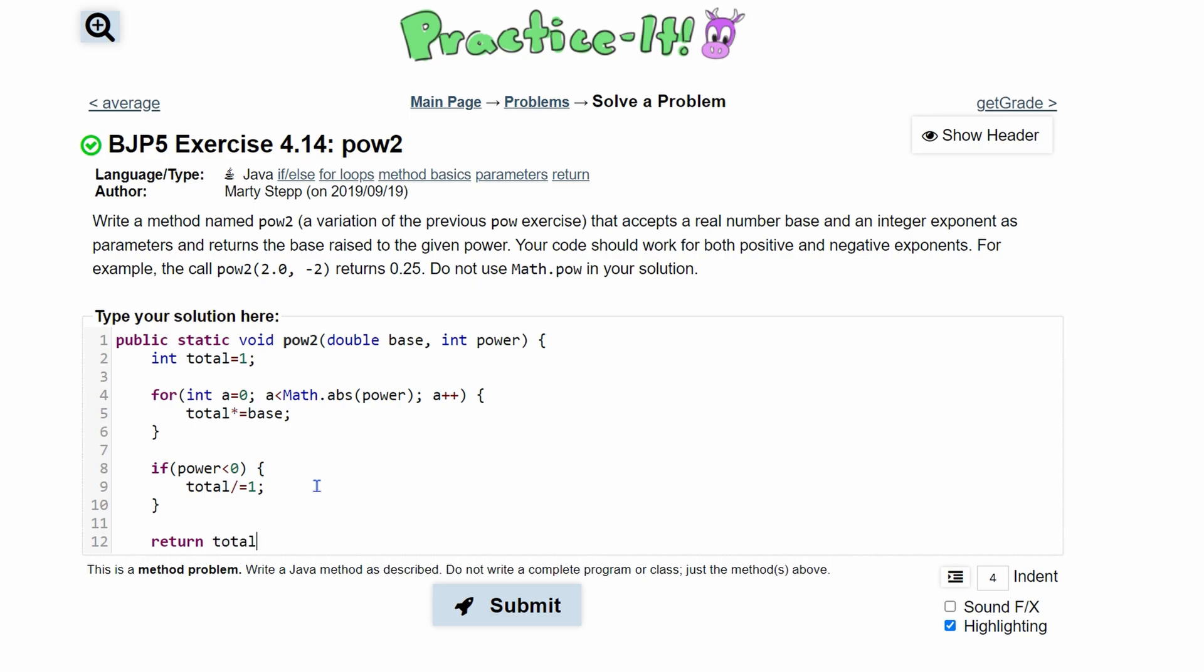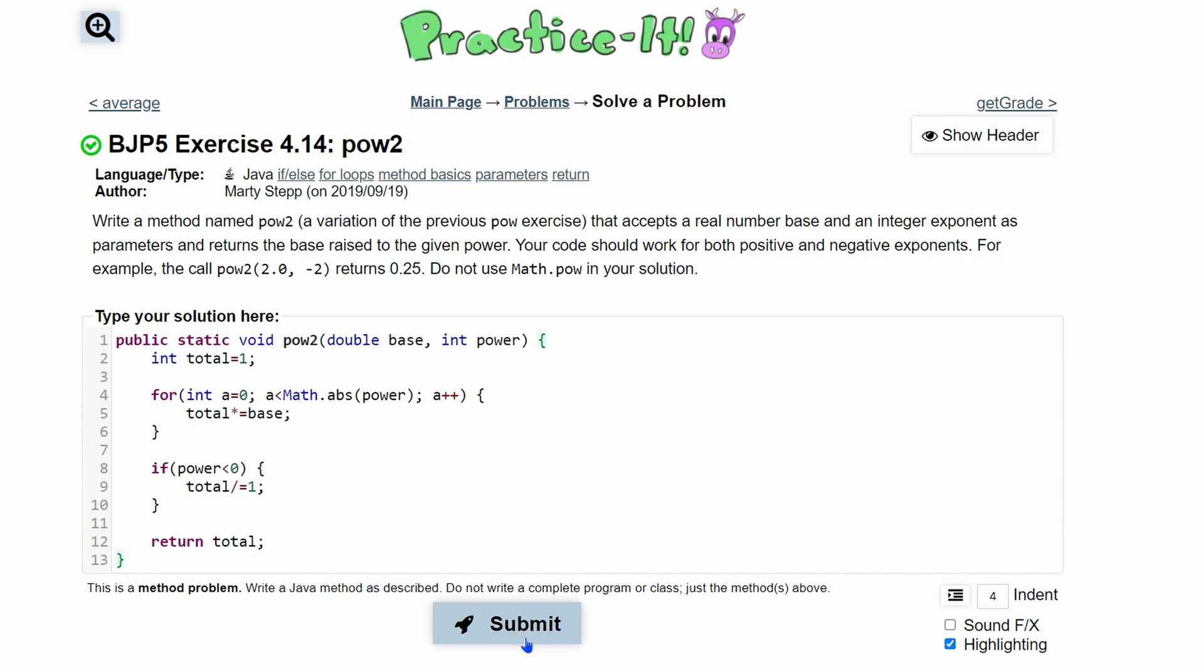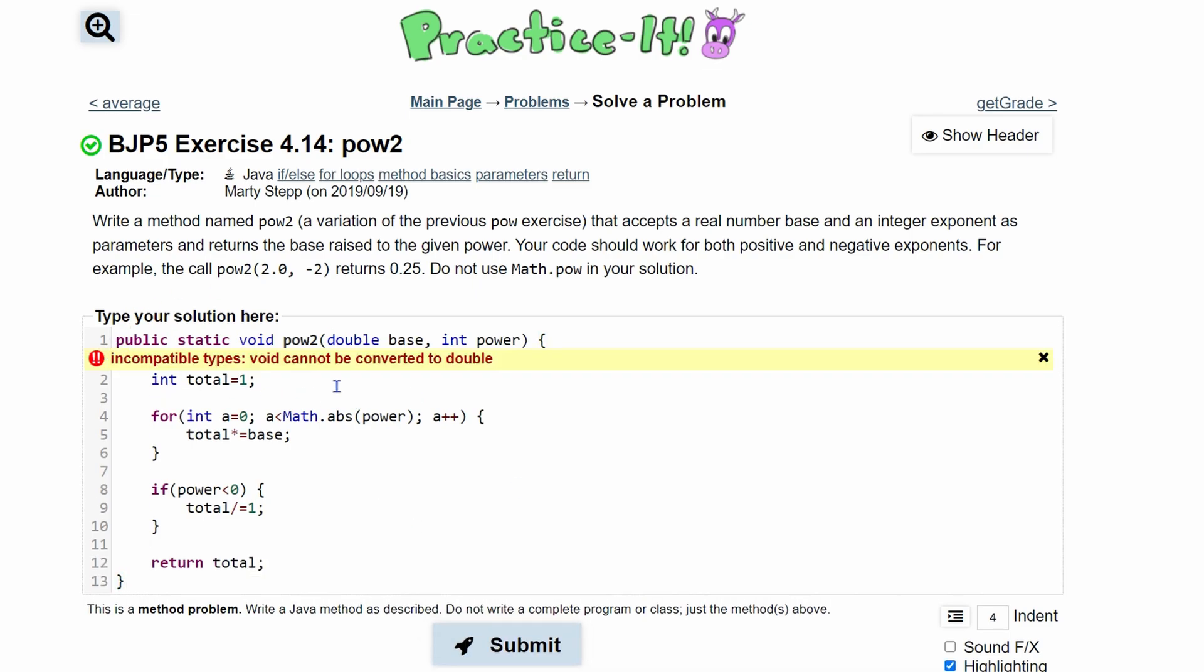We can then return the total at the end, close off our function, and we have an incompatible type. That's because we're trying to return a double, but this should be a double, not a void. I put it as void. That's how I usually start my methods until I know I need to return something. I know I need to return a double, so now we're returning a double.